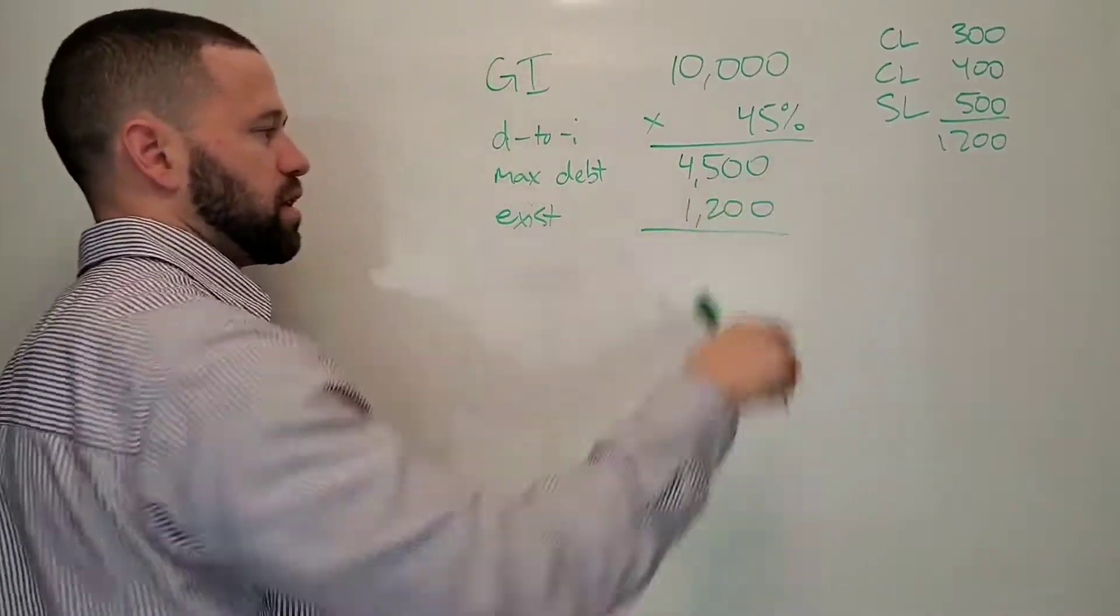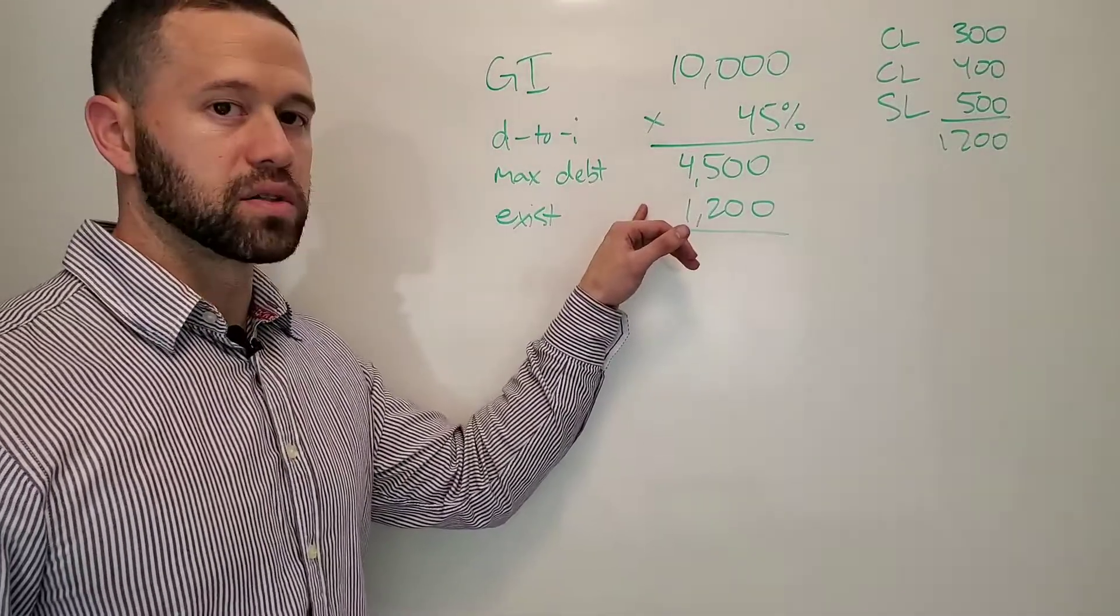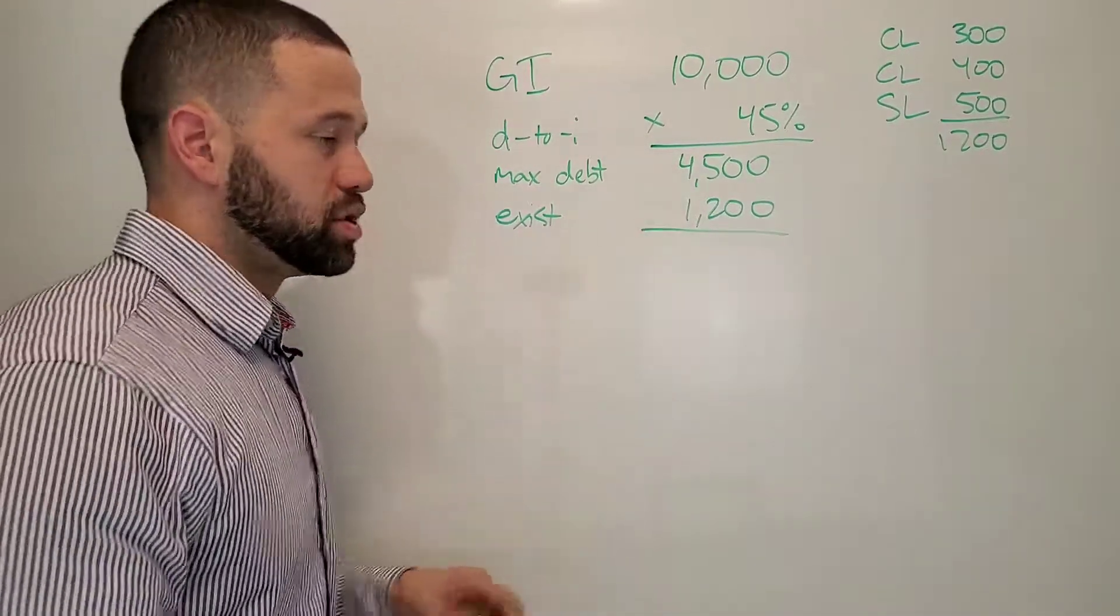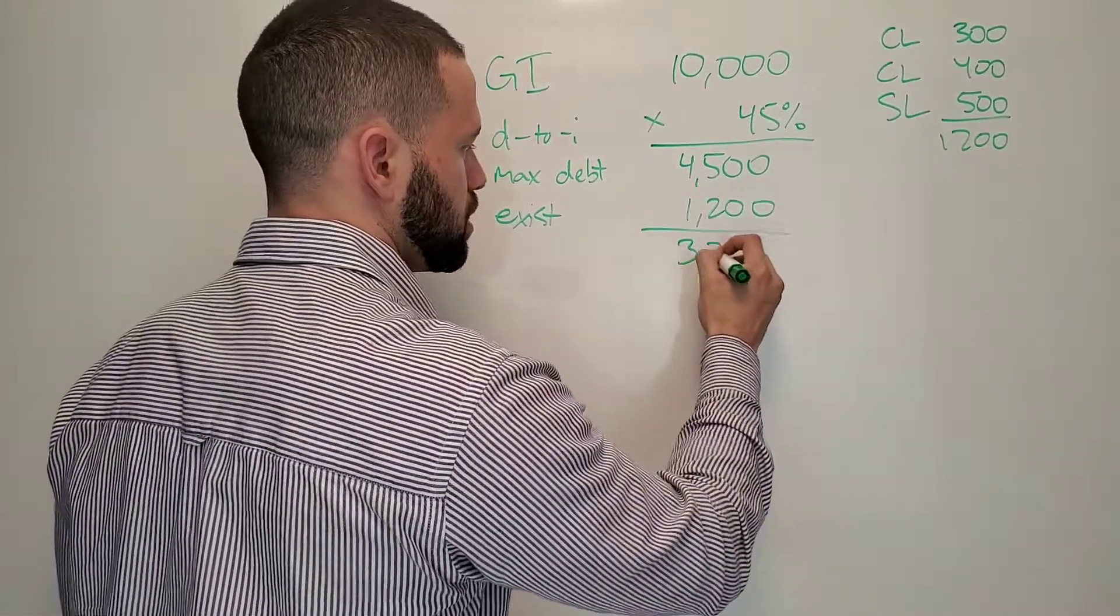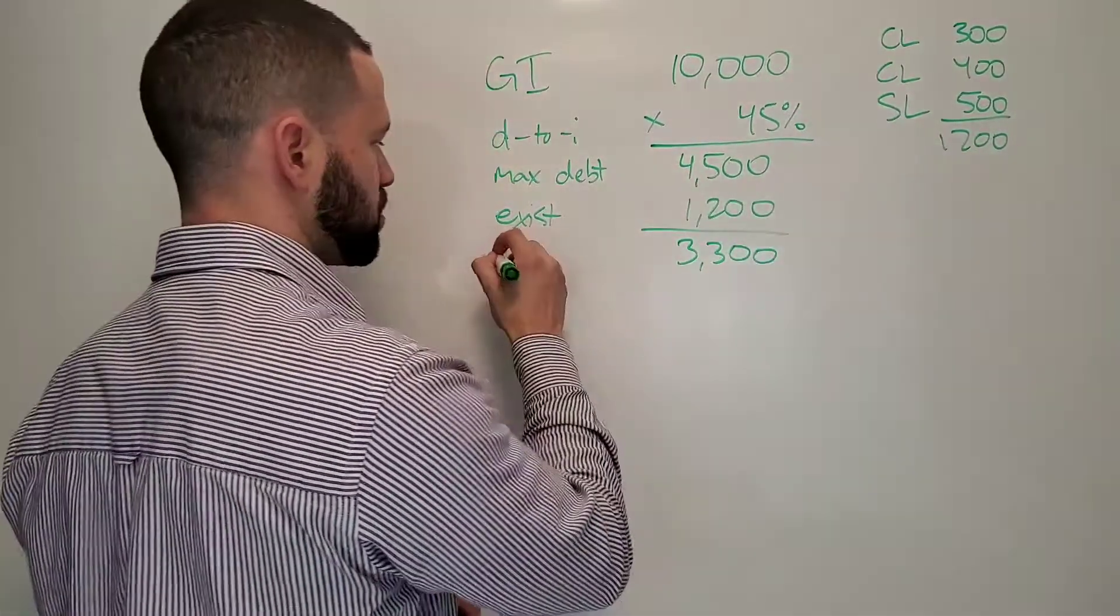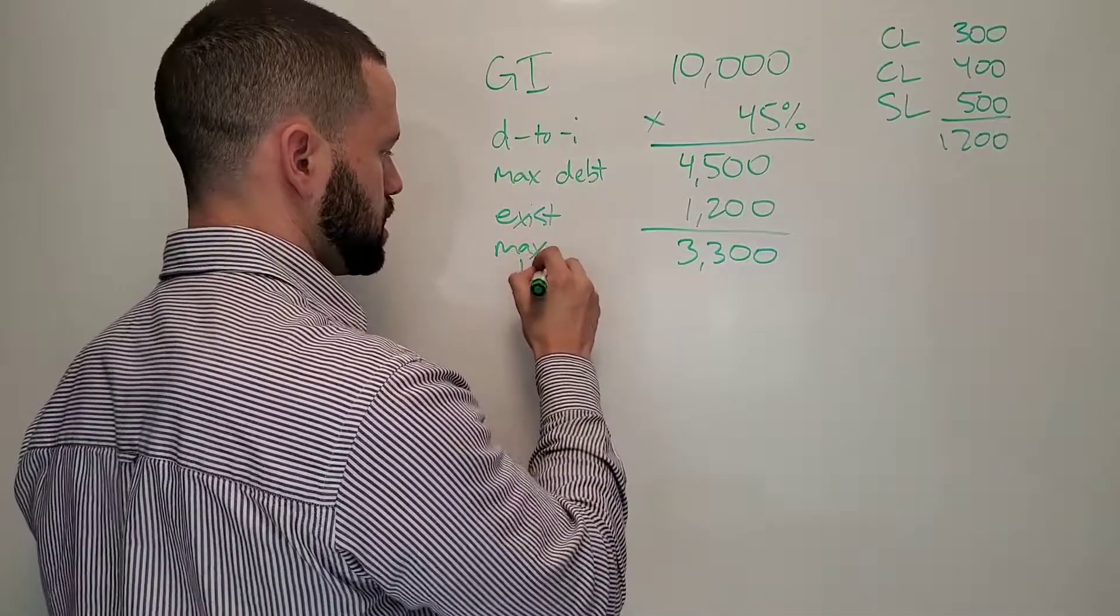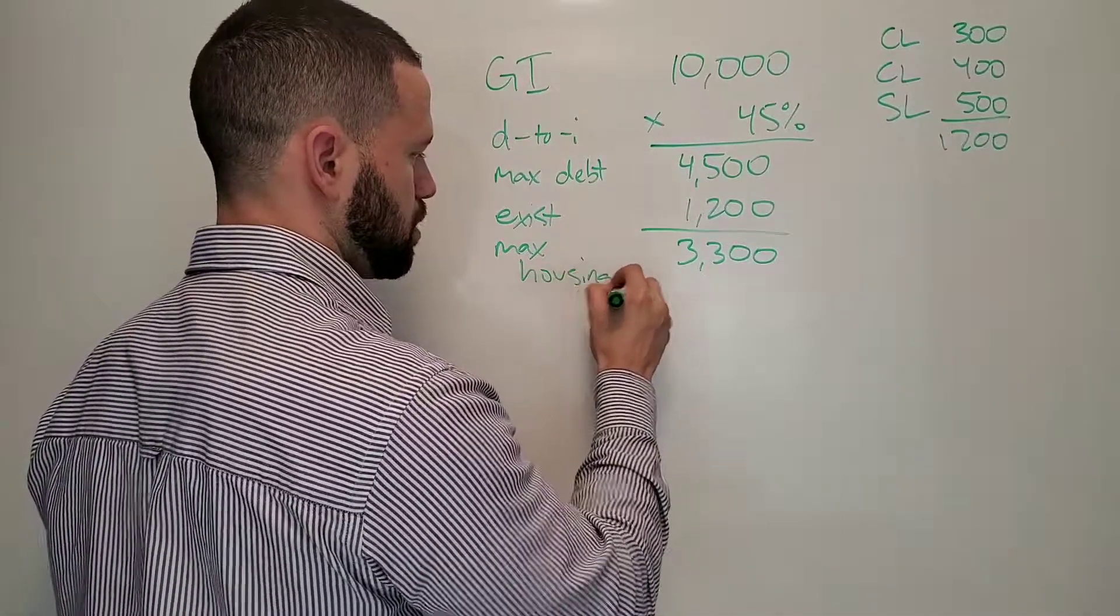So if your max is $4,500, you already have $1,200 of debt, but you don't have any housing debt yet, right? Because you haven't purchased the property, you're just renting. Well, the difference, that is your maximum housing payment.